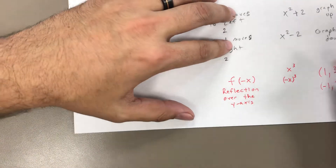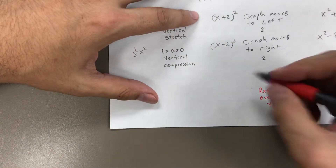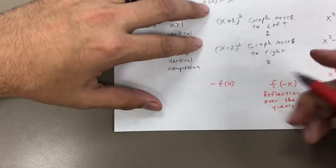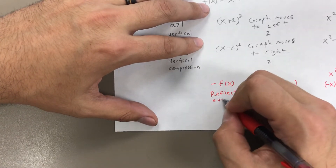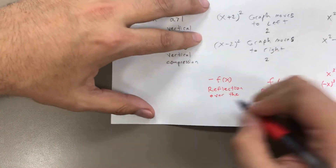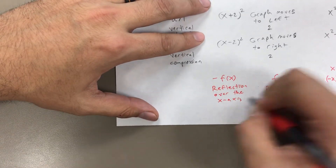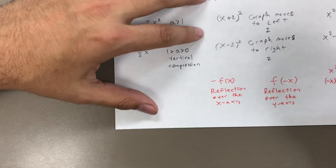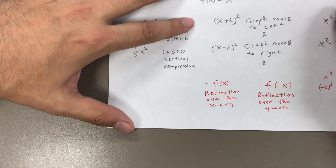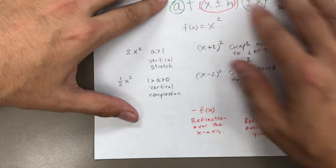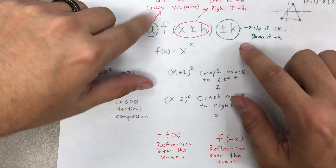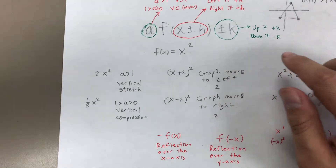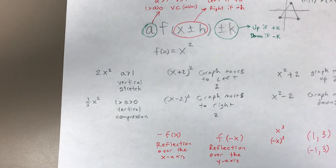And if we put a negative outside the parentheses on the function — like a negative A value multiplying — it's a reflection over the x-axis, because it affects the y values and changes their signs. So now I'm going to stop this video here, having explained all the transformations, and in the next video we'll use this information to identify transformations based just on how the functions look.